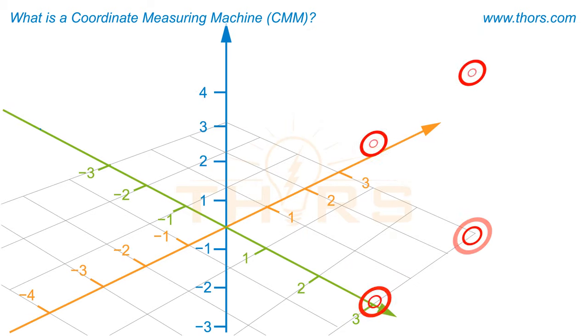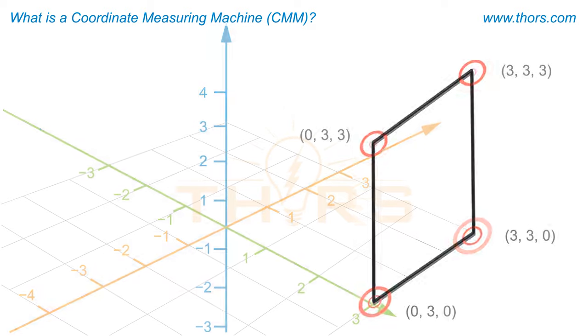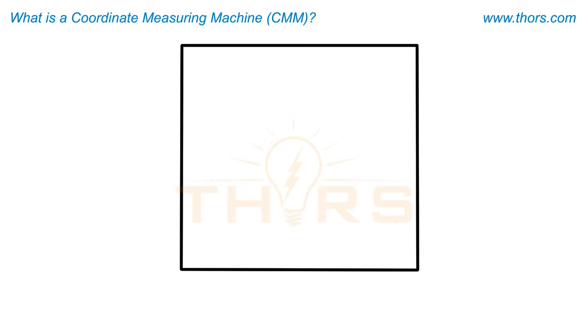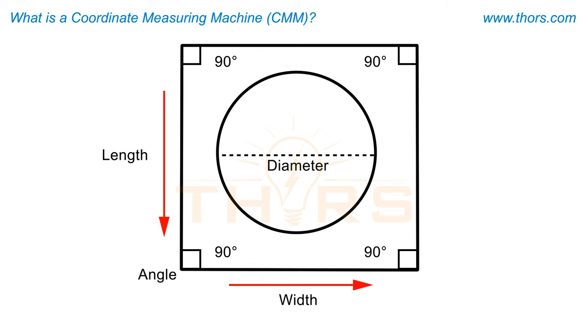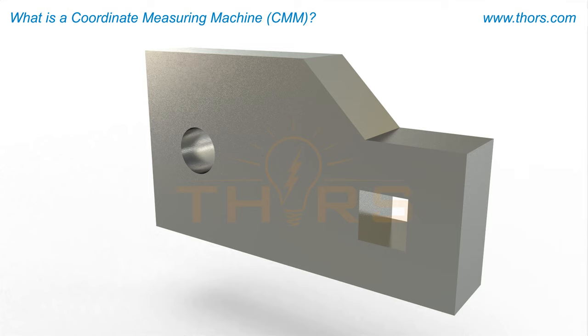The CMM software converts the coordinates of points obtained from probing into a geometric feature using mathematical formulae. Numerous characteristics of a feature like the length, width, angle, and diameter can be traced by the CMM software. The CMM software also establishes a relationship between features on the part by measuring the distance and angle between two or more features.